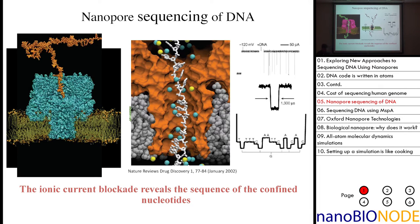This concept came about from David Branton, Deamer, and Church, who filed a patent in the early 90s with John Kasianovich about using nanopores for DNA sequencing. The idea is as follows: we have a nanopore - a nanometer-sized pore in a thin membrane. In this case, it's a membrane channel in a lipid bilayer, but you can also think about a hole in a silicon nitride membrane. That is placed in a water compartment with ions dissolved - typically one molar KCl, a highly concentrated solution. You take two electrodes, put them on opposite sides of the membrane, and apply electric bias.